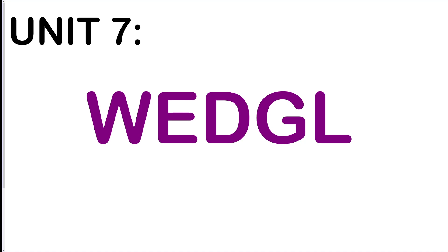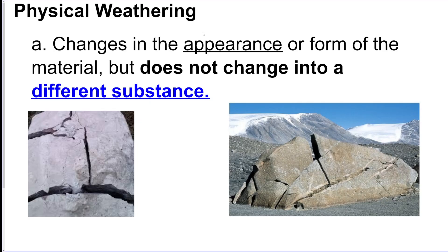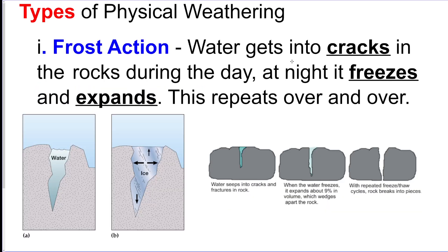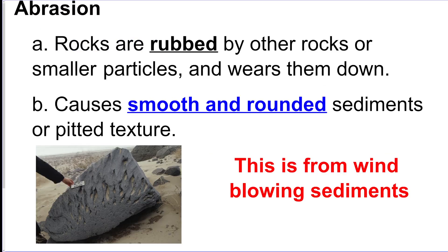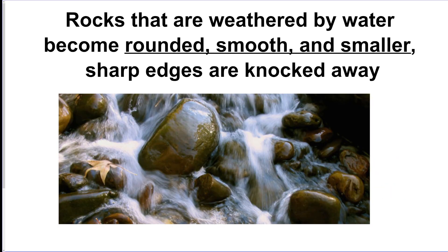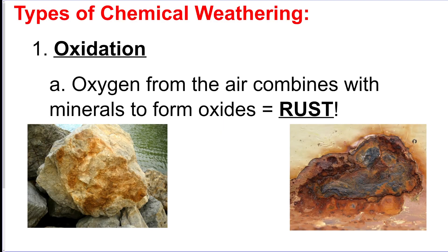Next unit is WEDGEL — Weathering, Erosion, Deposition, Glaciers, and Landscapes. Physical weathering changes the appearance or form of a material without changing it into a different substance. Frost action: water gets into cracks, freezes and expands, repeating over and over to widen the cracks — requires an environment that cycles below and above freezing. Abrasion: rocks hitting other rocks, mostly by wind or water. Rocks weathered by water tumble along the riverbed, chipping off edges, rounding and smoothing them, and decreasing their size.